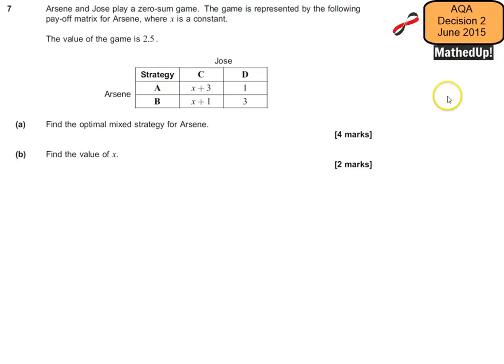Hi, this is question 7 from the AQA Decision 2 June 2015 exam paper. In this question, we are told that Arson and Jose play a zero-sum game. The game is represented by the following payoff matrix for Arson, where x is a constant. The value of the game is 2.5.